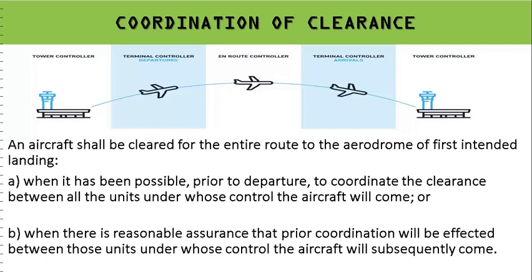When it is not possible to coordinate the full route clearance prior to departure, but there is a reasonable assurance that prior coordination will be effected between the units under whose control the aircraft will subsequently come, the aircraft need not hold near the terminal control area at the departure station. It will be released to the next controller, and each subsequent unit will coordinate with the following unit. It is not necessary for the departure tower controller to coordinate with all five or six subsequent units — each unit coordinates with the next — but the information must be available to the next control unit before the aircraft is released to it.